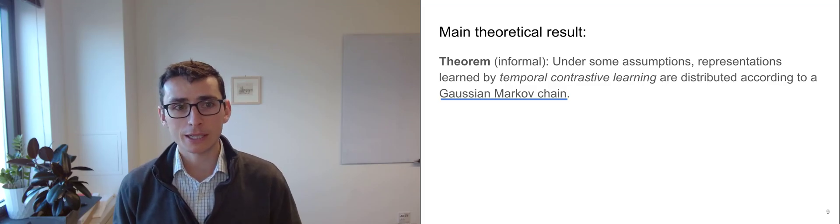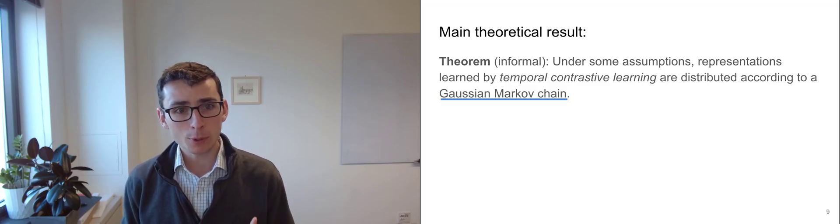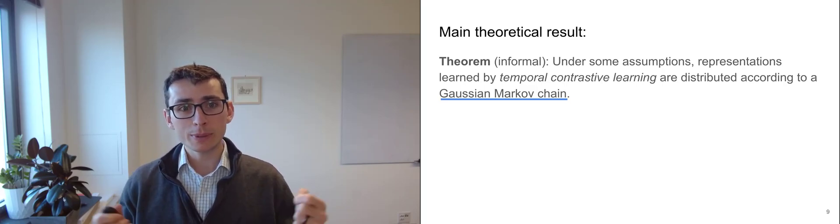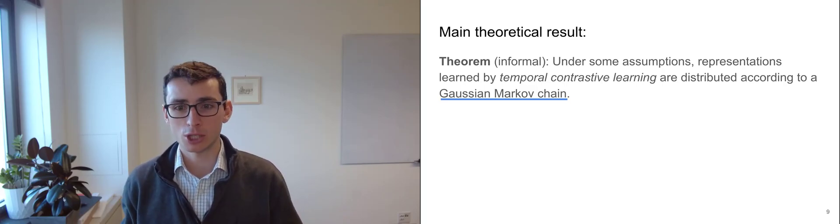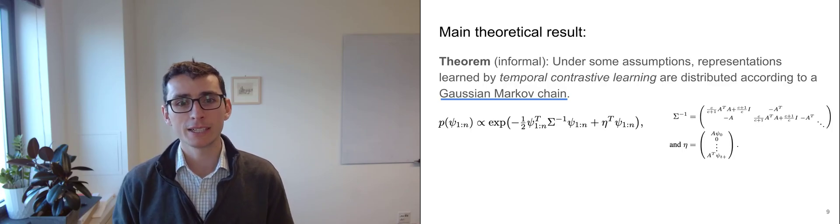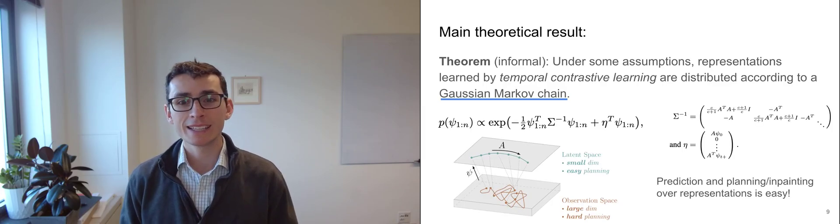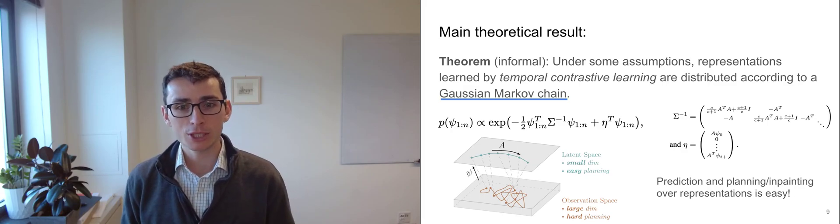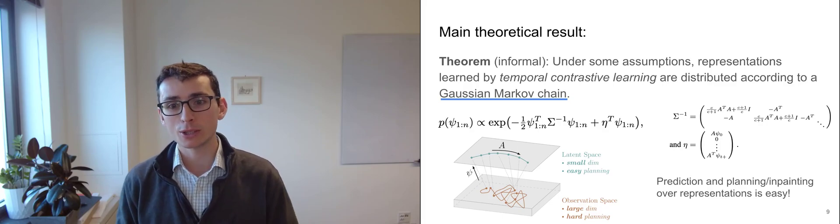Now, the main theoretical result of our paper is that this temporal contrastive learning method ends up learning representations that are distributed according to a Gaussian Markov chain. Now, this Gaussian Markov chain is just a really fancy way of saying that they have a nice distribution. Given these representations, we can then solve problems about prediction and planning simply by inverting a low dimensional matrix.